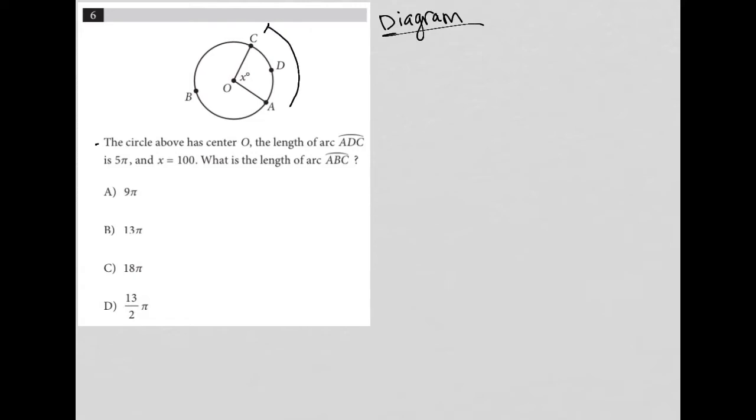I'm going to write that down: 5π and x equals 100. We don't need to call it x any longer because we know that it is 100 degrees.